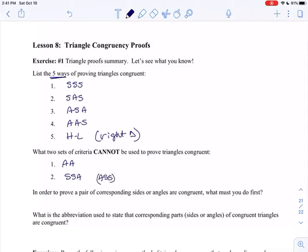What ways cannot be used to prove triangles congruent? That's Angle, Angle, Angle, or Side, Side, Angle, or Angle, Side, Side. Those are not ways to prove triangles congruent to each other. So this is like a little summary of what we've got going on so far.